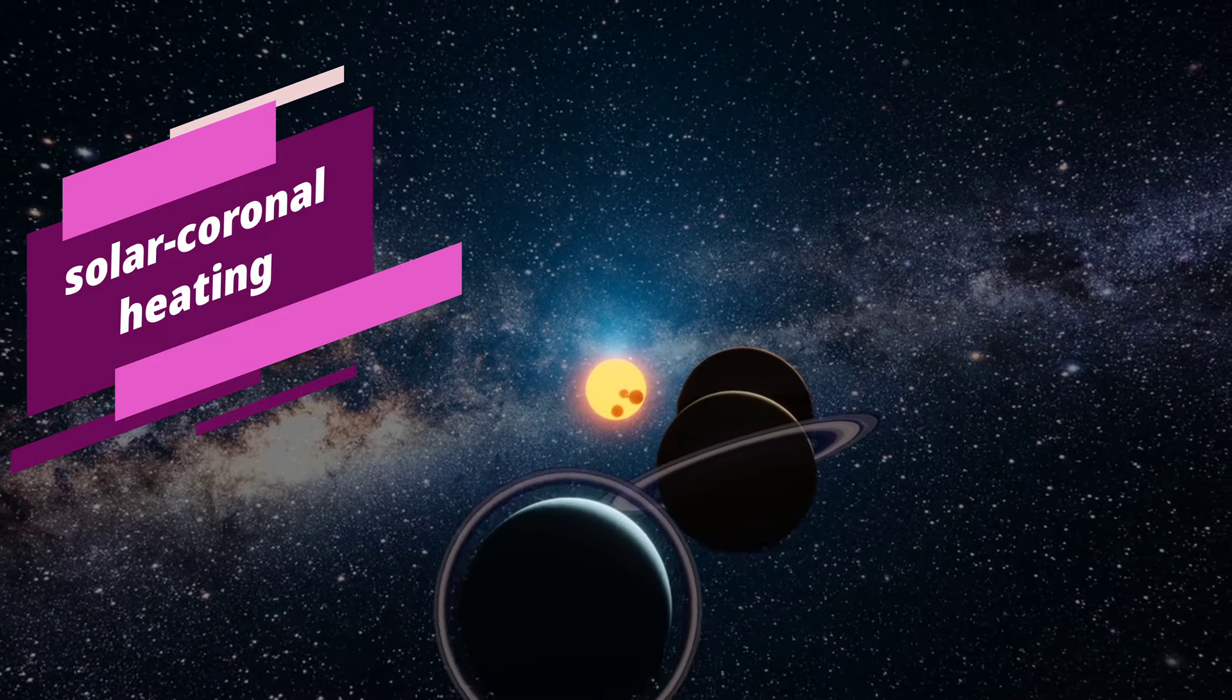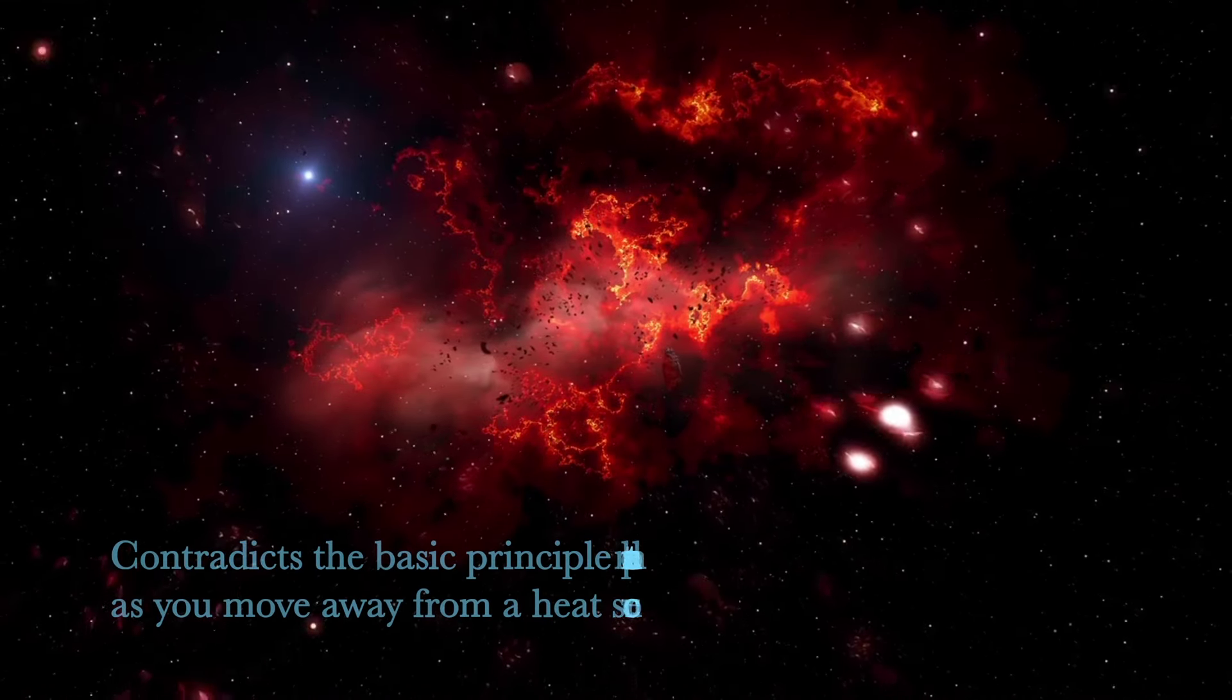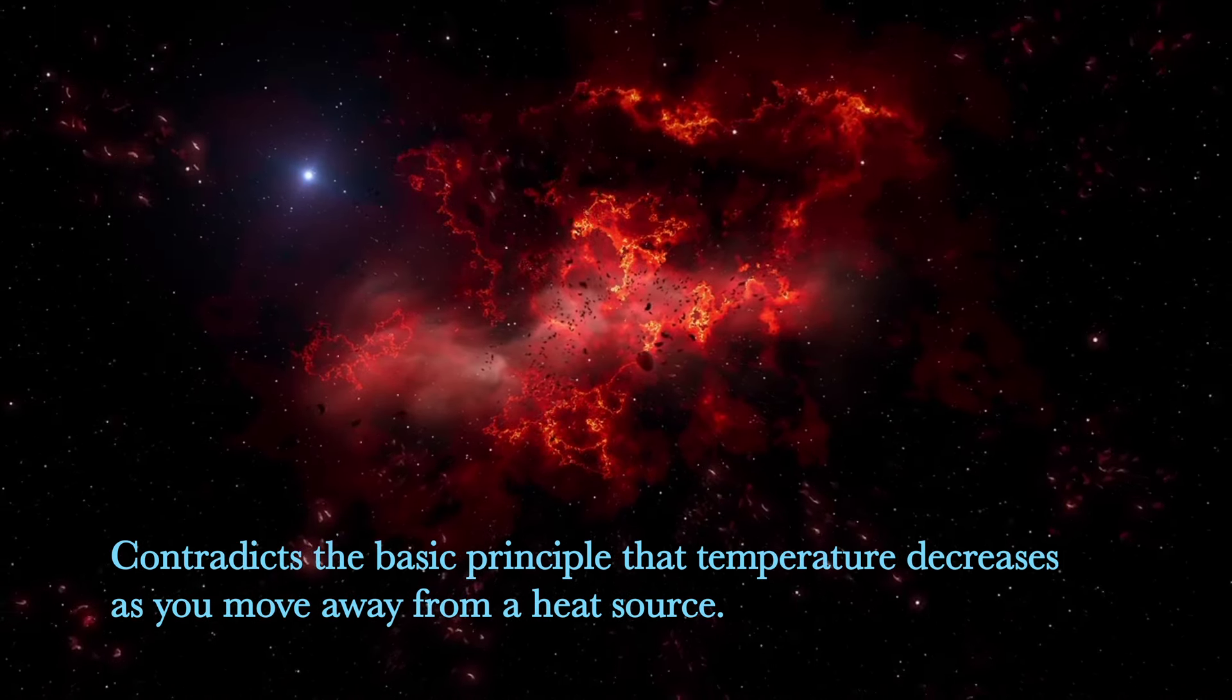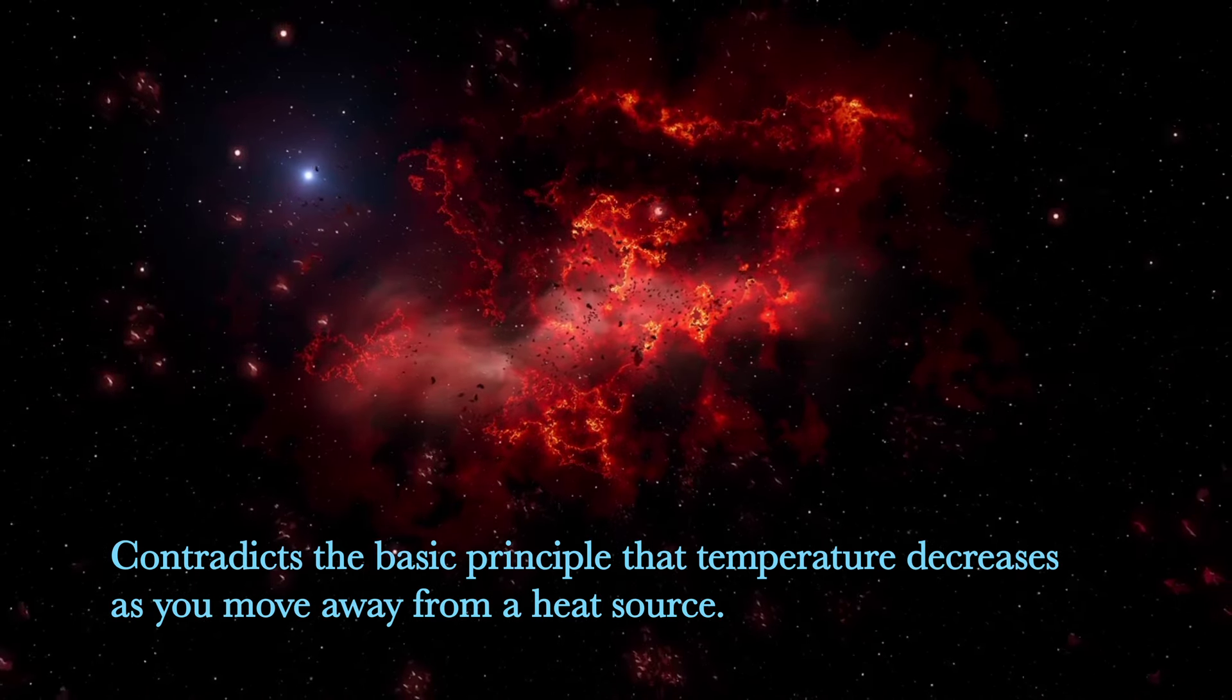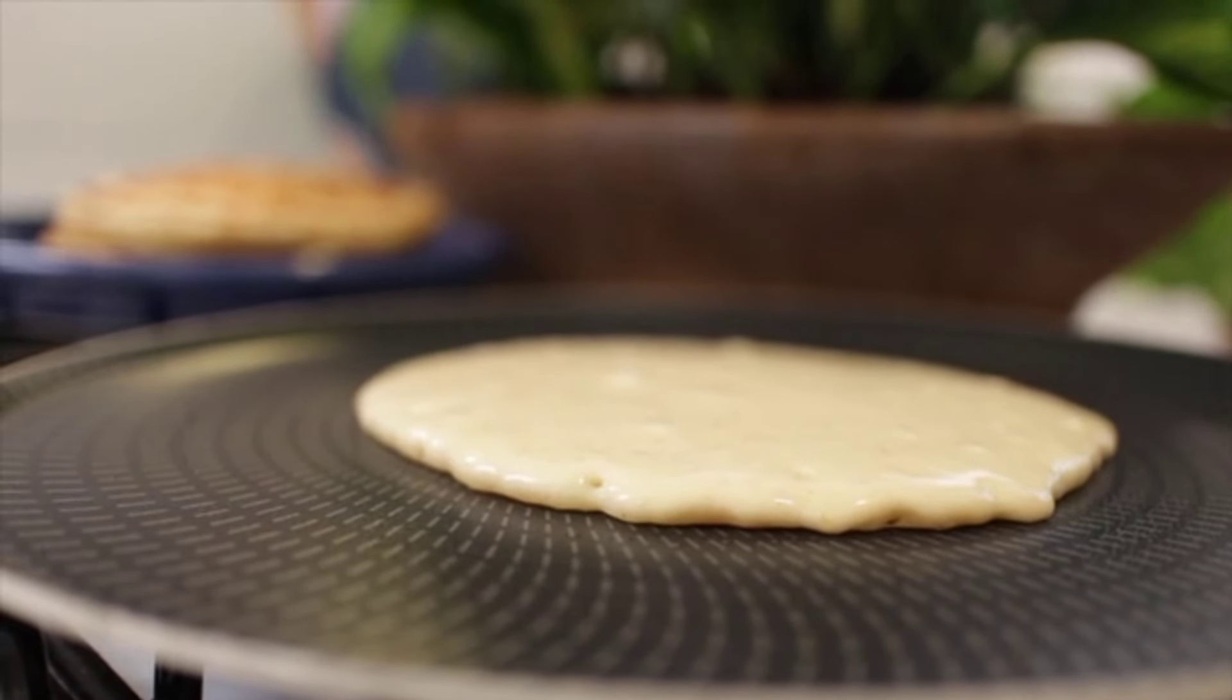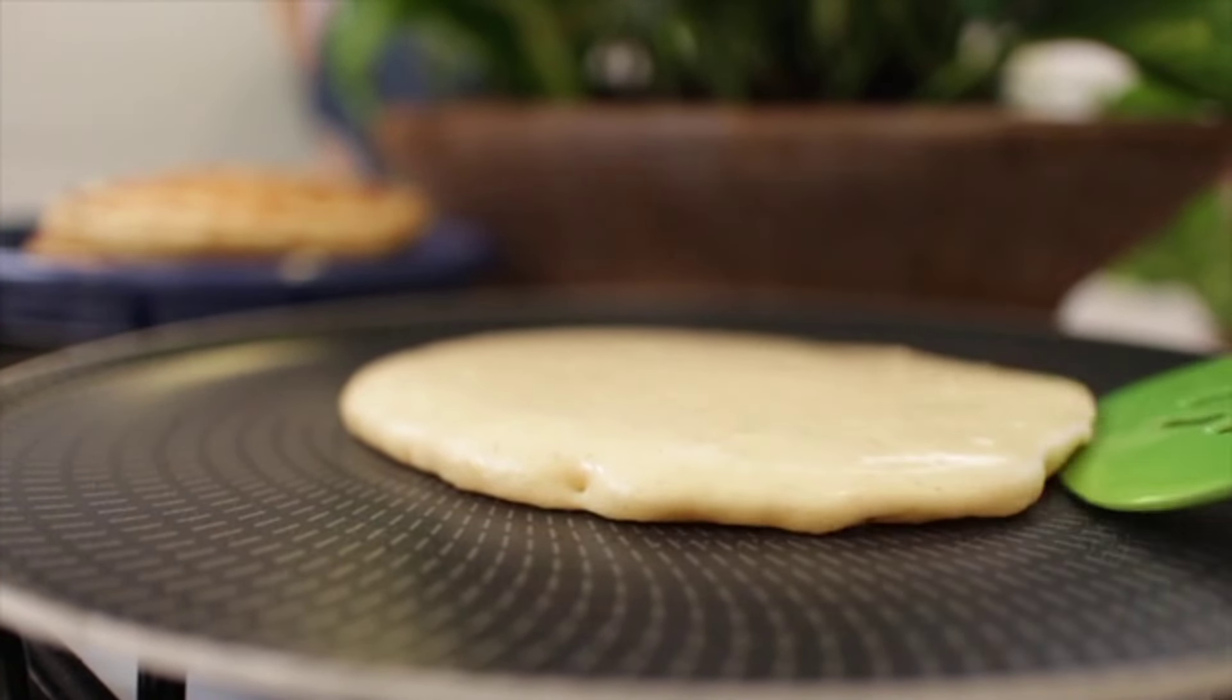One of the basic principles is that temperature decreases as you move away from a heat source. If you have a heated surface on a body, the outer surface will automatically have lower temperature. This is a real-time example.